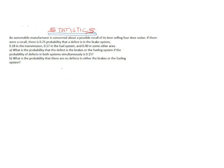Part (a): we are to find what is the probability that the defect is in the brakes or the fueling system, given that the probability of defects in both systems simultaneously — that is, brakes and fueling system — is 0.15.